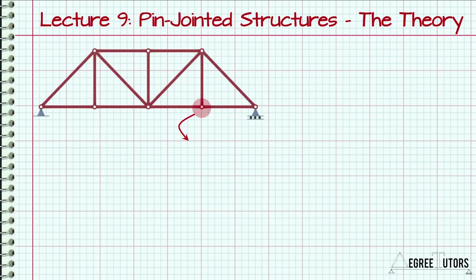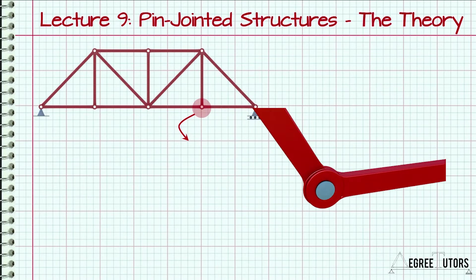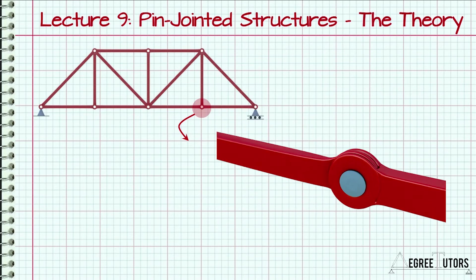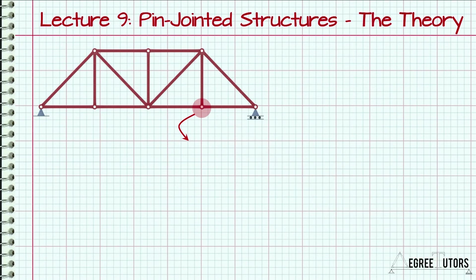The joints between members are assumed not to transfer any moment, only forces. The joints can be thought of as hinges allowing free rotation.